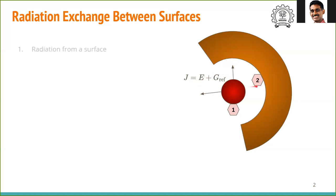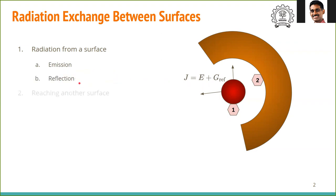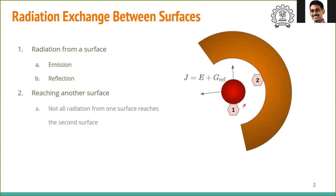When we talk about radiation from a surface, there are two sources: one is the emission, the other is the reflection. Not all the radiation coming out of a surface will reach the second surface. As seen in this picture, the radiation coming from this half of the sphere will reach surface number two; however, the radiation going out from here will not reach this surface.